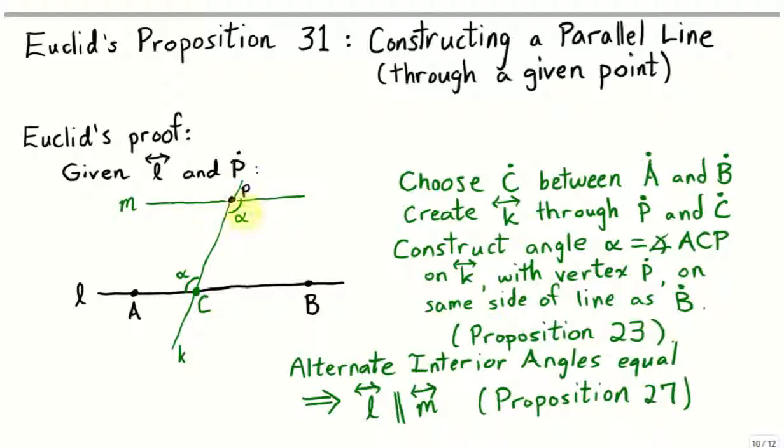Now, because these two alternate interior angles are equal, it follows from Euclid's Proposition 27 that the line M is parallel to the line L.